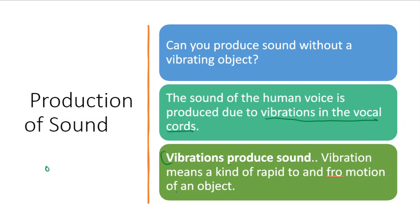You cannot produce sound without a vibrating object. For example, the sound of a human voice is due to the vibrations in the vocal cord — vibrations in the vocal cord produce the human voice. What is vibration? Vibration is a rapid to-and-fro motion of an object. A particle vibrates by moving a very small distance, rapidly, back and forth — that to-and-fro movement is known as vibration.